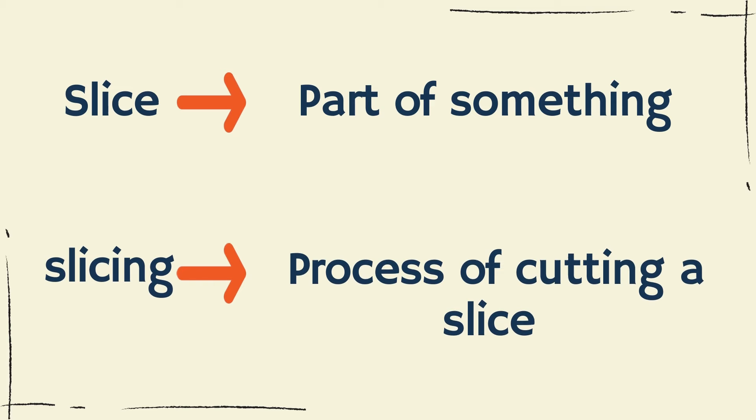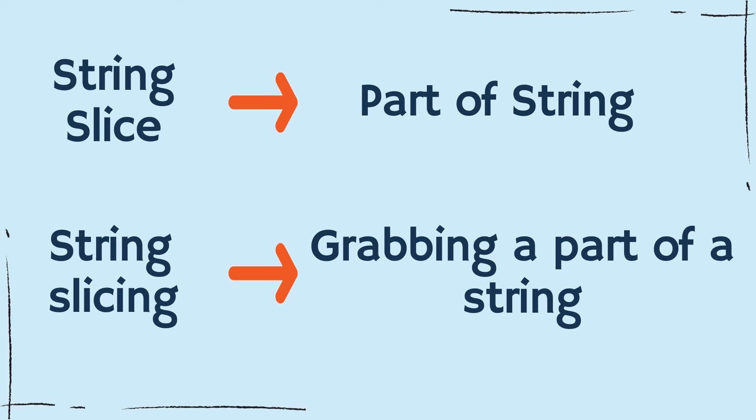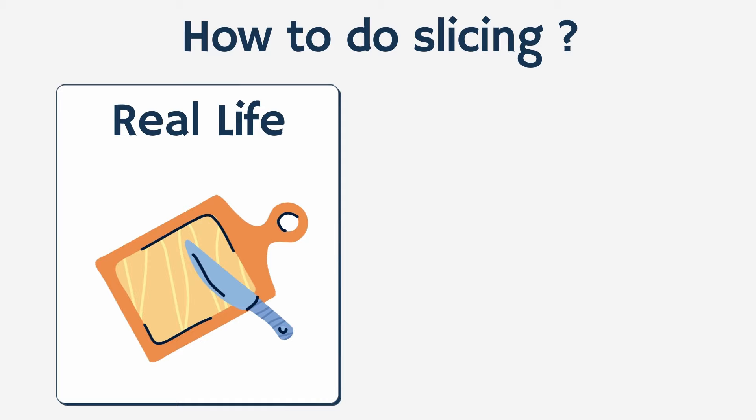Let's start with the basics first. What exactly is slicing? In real life, a slice means a part of something like a pizza or a fruit, and the process of cutting a slice is known as slicing. Similarly, a slice of a string is a part of the string, and the process of grabbing a part of the string is known as string slicing. In real life, slicing is done using a knife or a sharp material, while slicing in Python is done using the slicing operator, which is the colon.